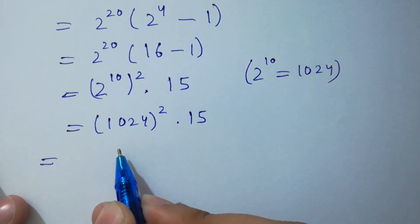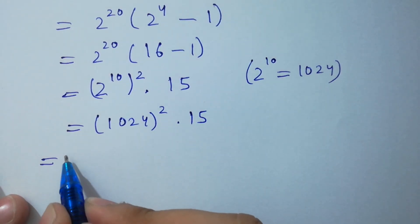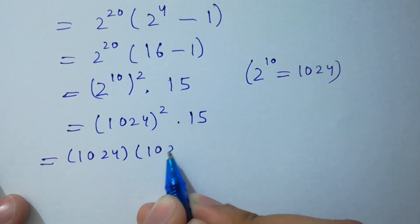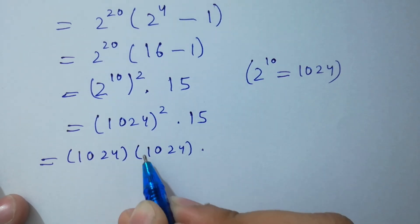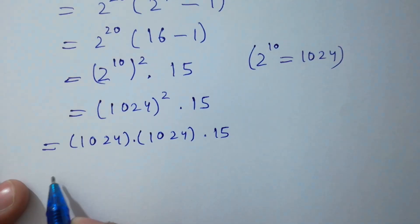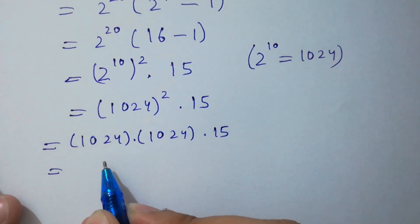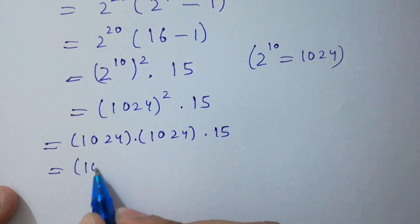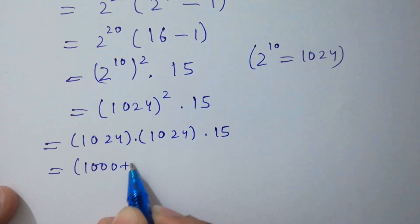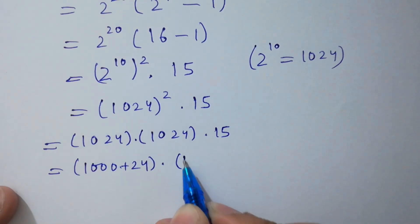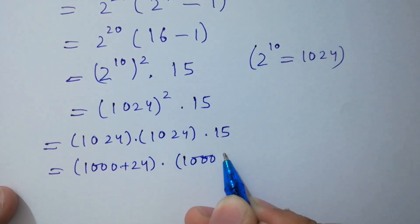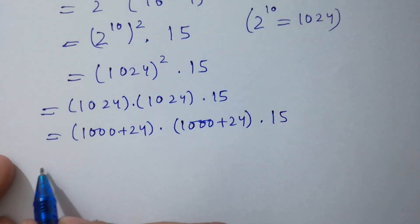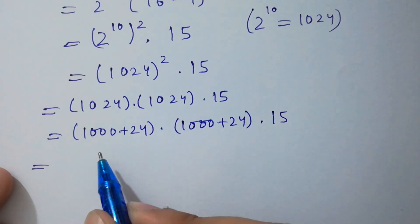1024 squared can be written as 1024 times 1024 times 15. And 1024 is the same as 1000 plus 24, so we have 1000 plus 24, times 1000 plus 24, times 15.